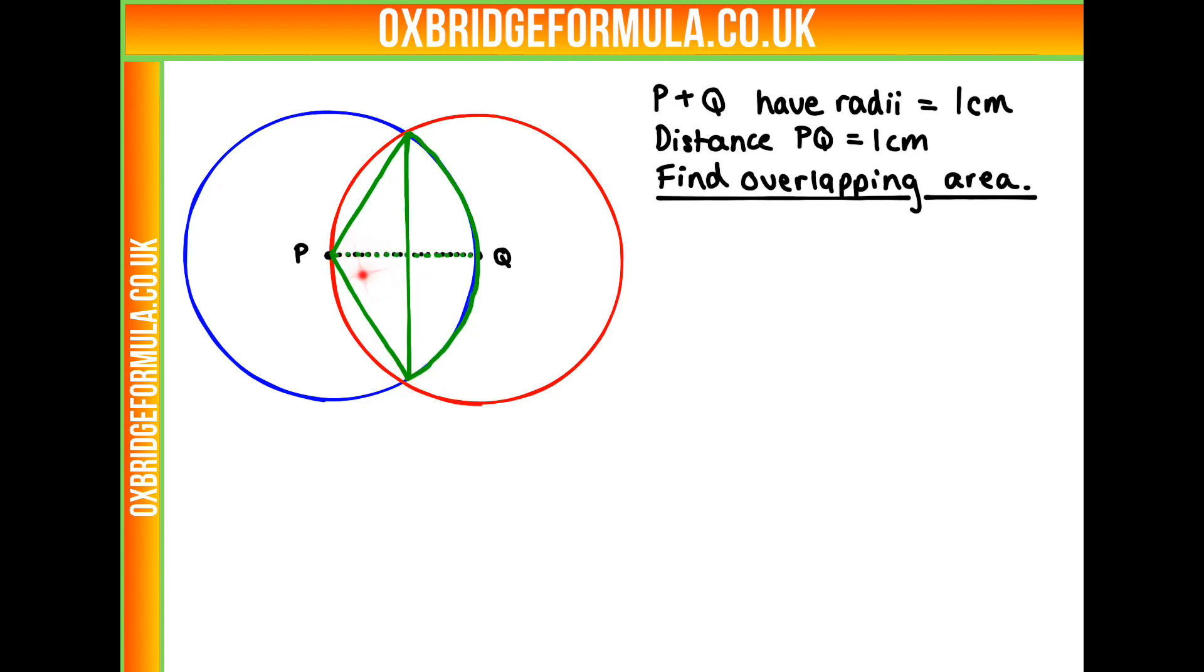So if I take this out, this is the bit we can find there. If we times that by 2, we're going to get our full overlap. So our overlap is 2 times our area of our segment here, take away this triangle bit there.